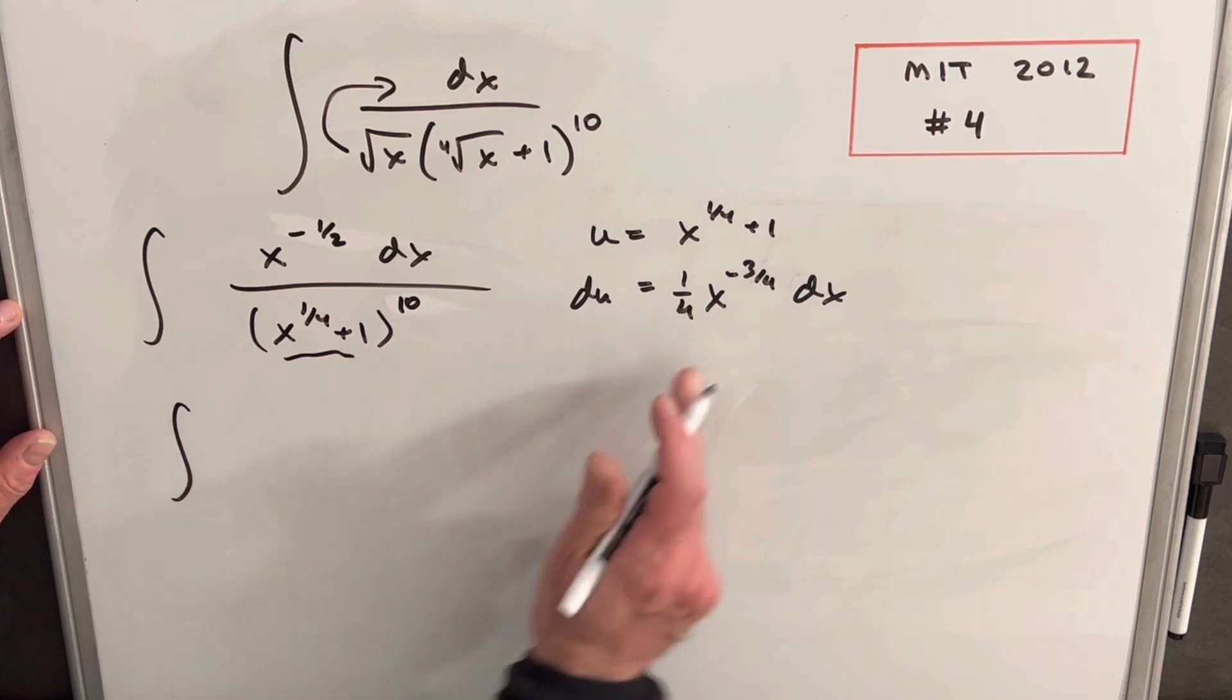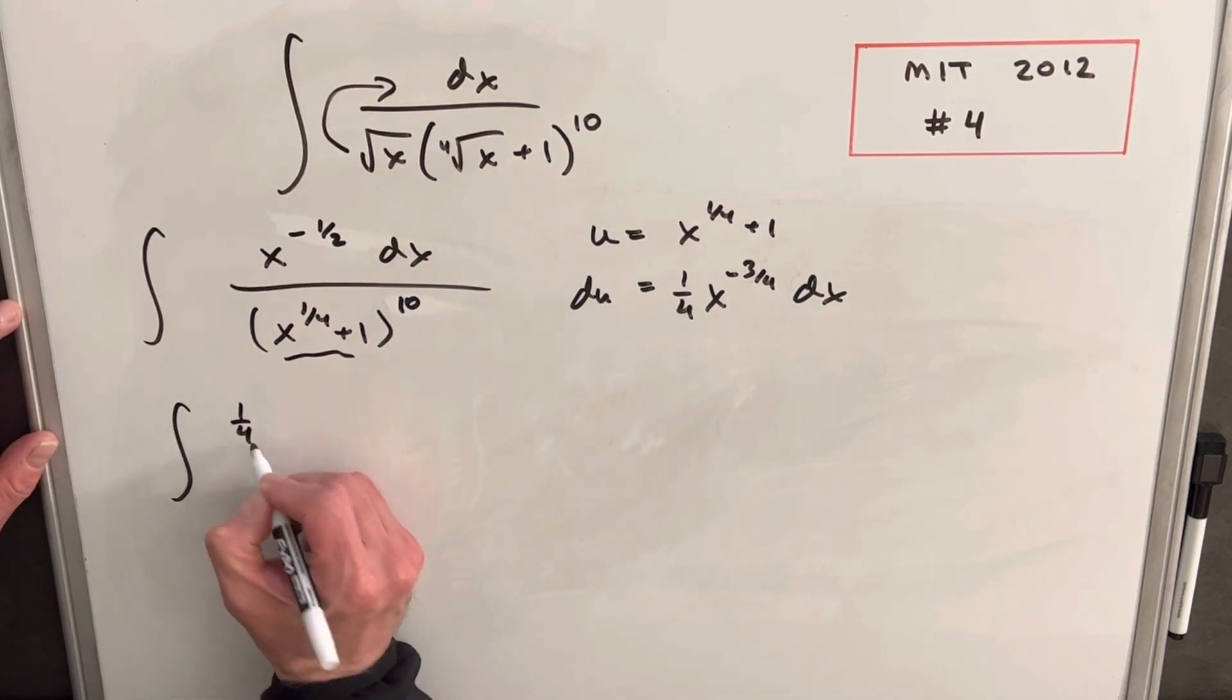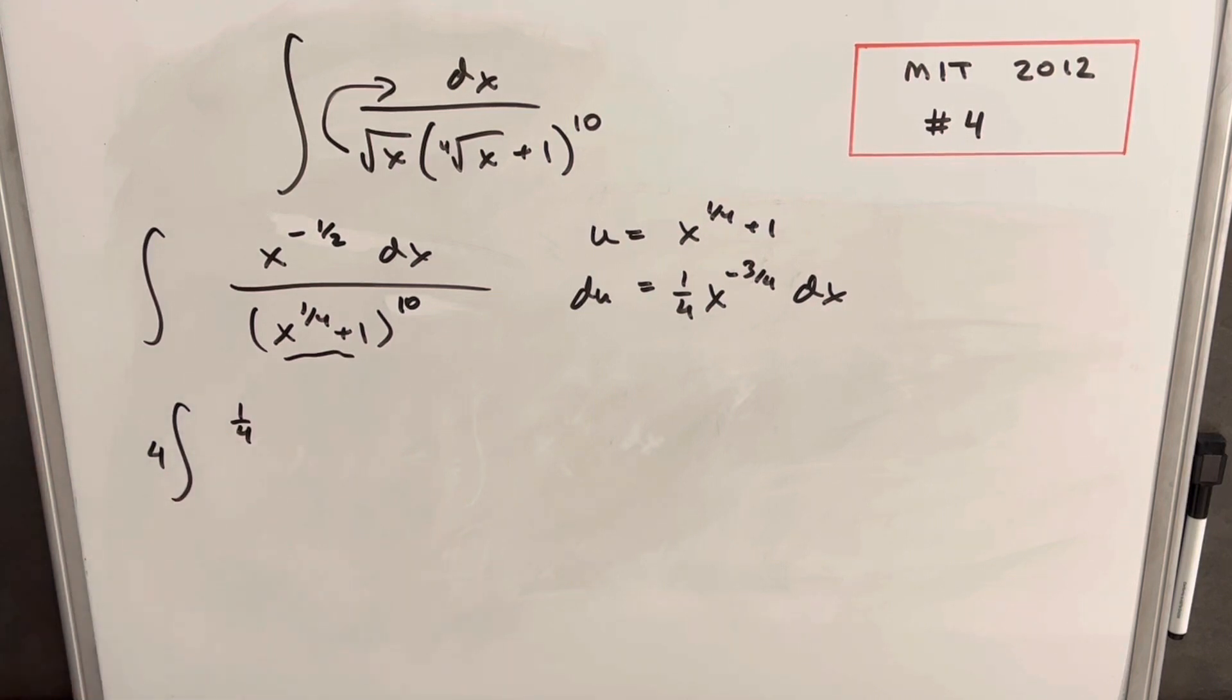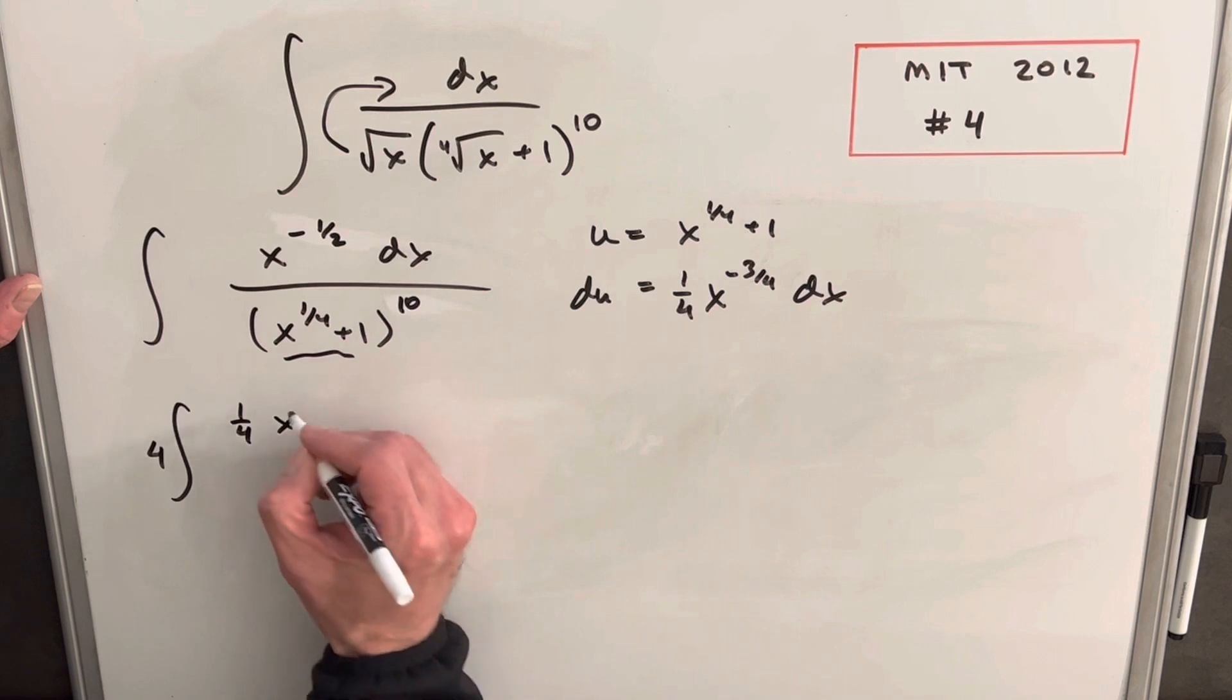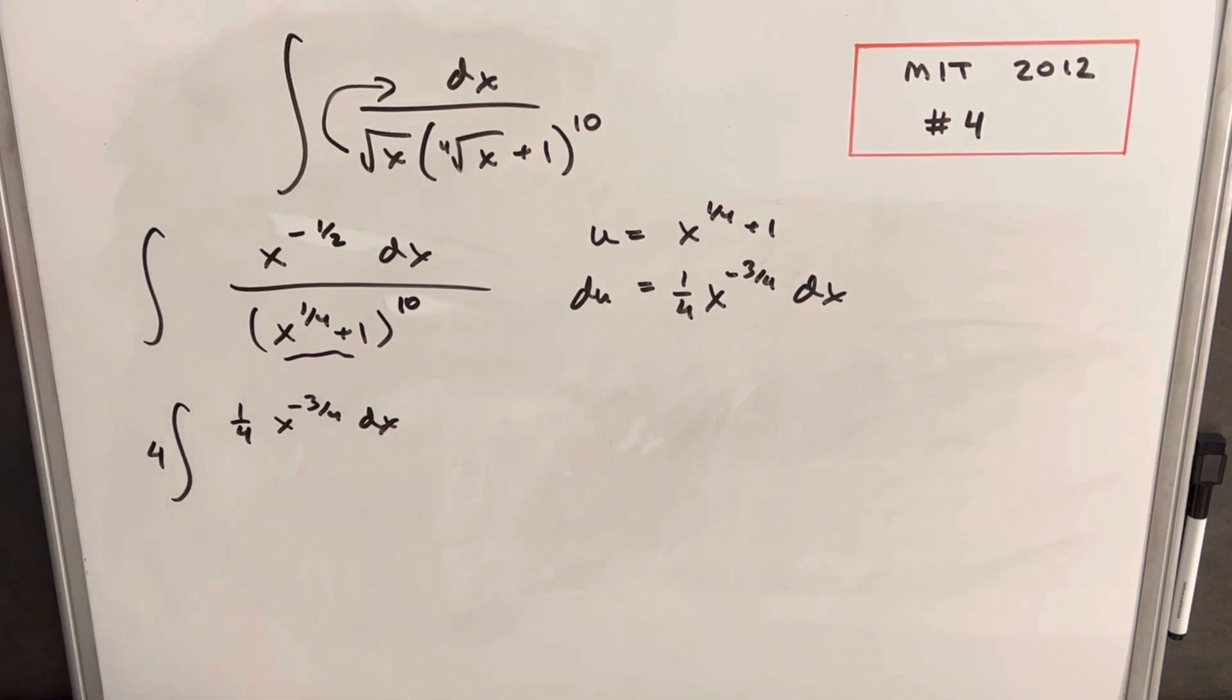So first I'm going to create this one-fourth out front, but I need to multiply by 4, so I'm not changing it, we're just multiplying by 1. And then I'm just going to force our whole du into the numerator right now. But then, now we have changed it because we have x to the minus one-half here, and we have x to the minus three-fourths here.